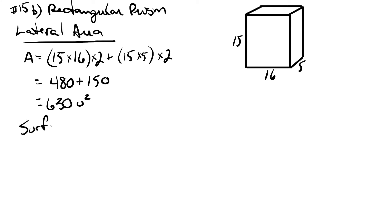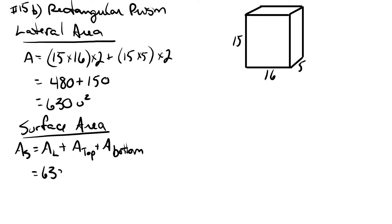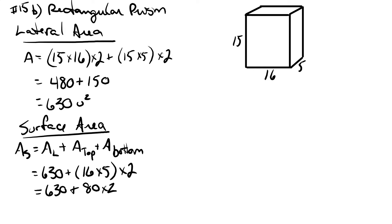Now we'll find the surface area. We take the lateral area and add in the area of the top and the bottom. The lateral area is six hundred and thirty. The area of the top is sixteen times five, and because there's a top and a bottom we multiply that by two, giving us one hundred and sixty. Adding it all together we end up with seven hundred and ninety units squared.